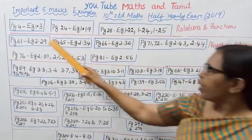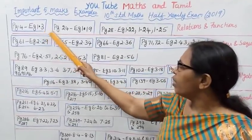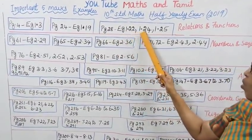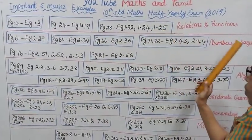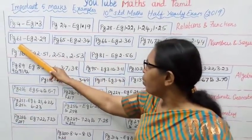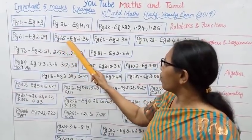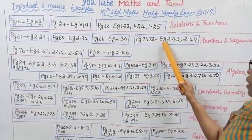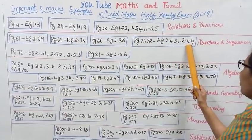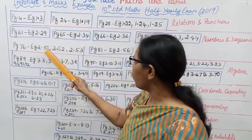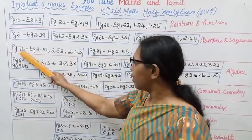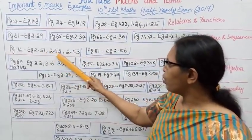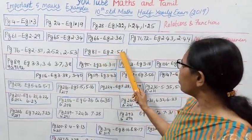First, Relations and Functions: page number 4, example 1.3; page 24, example 1.1; page 28, examples 1.22, 1.24, 1.25. Next, Numbers and Sequences: page 61, example 2.29; page 65, example 2.34; page 66, example 2.36; page 71-72, example 2.43, 2.44; page 76, examples 2.51, 2.52, 2.53; page 81, example 2.56.